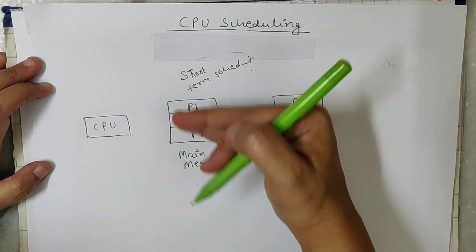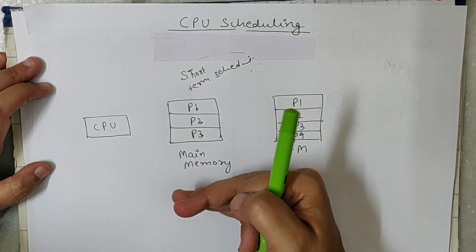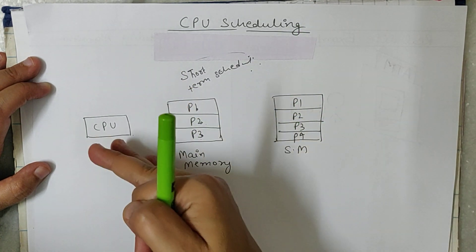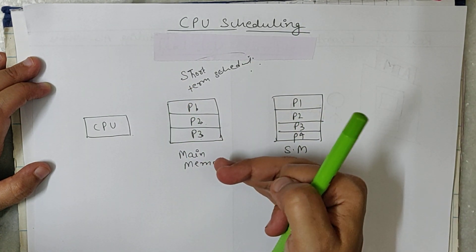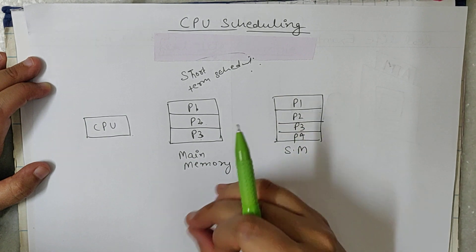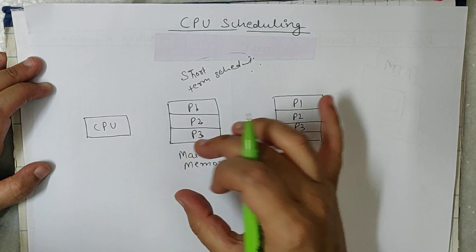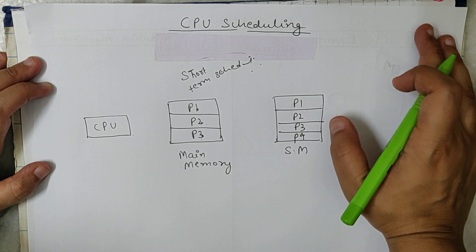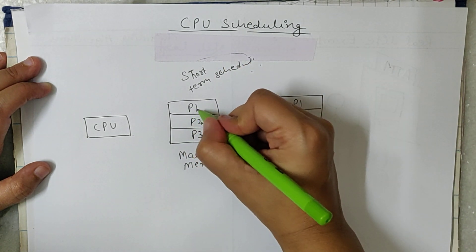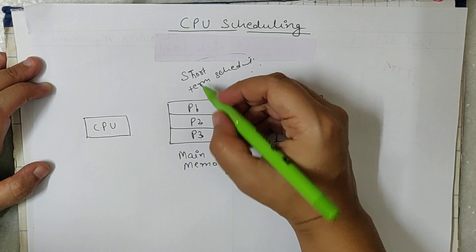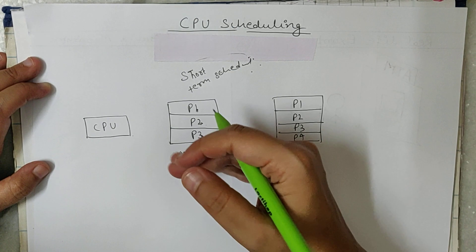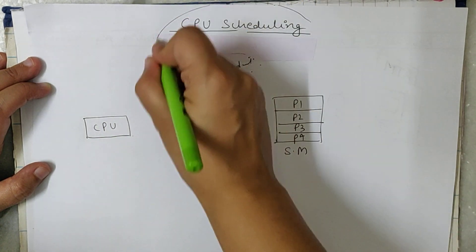There are many processes in the ready queue, and we have to decide which one goes first. This is all based on CPU scheduling algorithms. Different algorithms exist, and based on particular criteria, we decide which process will get the CPU first and which one will get it later. This is called CPU scheduling.